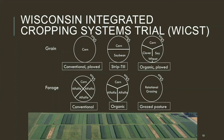Then we have three forage systems. Since Wisconsin is such a big dairy state, it's important to have representative dairy forage systems. We have both a conventional and an organic alfalfa-corn rotation, and also a rotationally grazed pasture where we have heifers on the land over the summer months. Both alfalfa rotations also receive manure. This trial has been in place for 25 years, replicated in time as well as space. We sampled from the corn phase of all systems except the pasture, doing this sampling in 2012 and 2013.